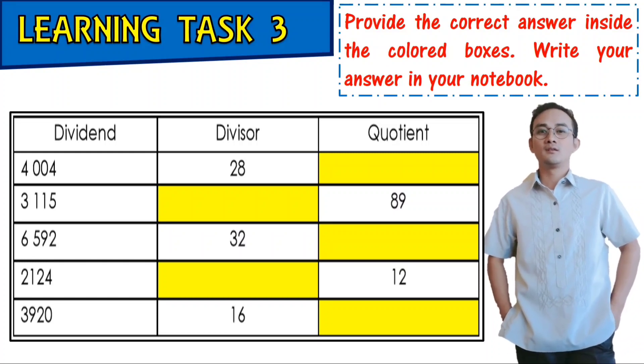Provide the correct answer inside the colored boxes. Write your answer in your notebook. What is the quotient if the dividend is 4,004 and the divisor is 28? What is the divisor if the dividend is 3,150 and the quotient is 89? What is the quotient of 6,592 and 32? If the quotient is 12 and the dividend is 2,124, what is the divisor? What is the quotient of 3,920 and 16?